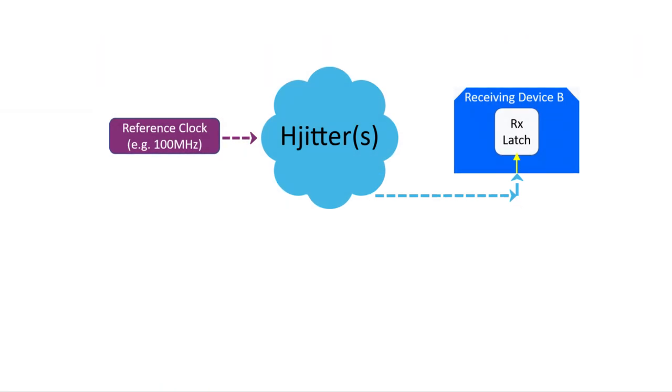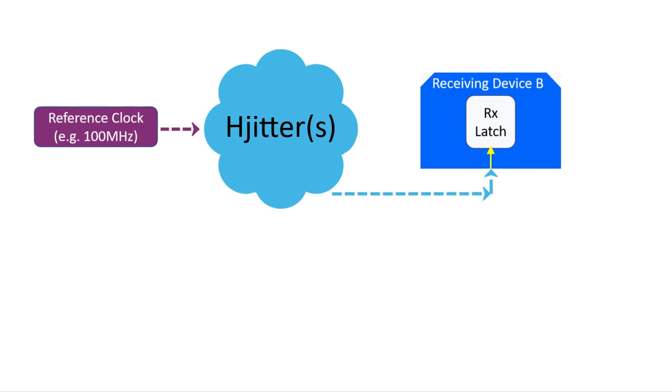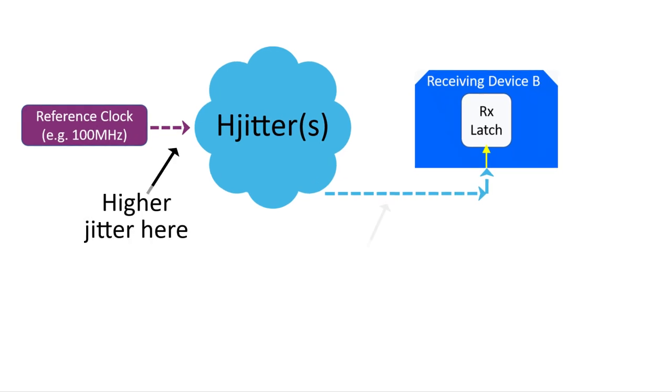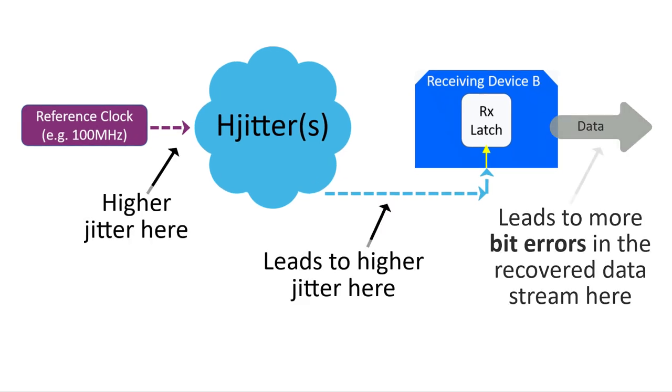This is really important. The worse the post-filtered jitter on your reference clock, the more bit errors there are when device A communicates with device B. Now, the more bit errors there are, the worse the data communication link is.